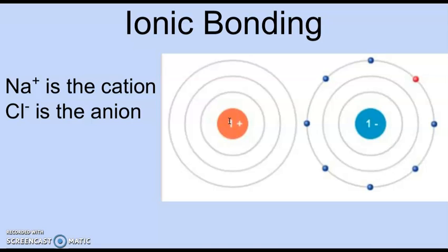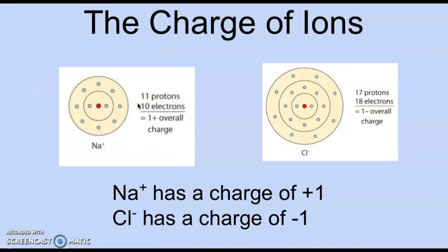Sodium now has a plus one charge and is a cation. Chlorine has a minus one charge and is the anion. You can figure out charge by subtracting electron number from proton number.